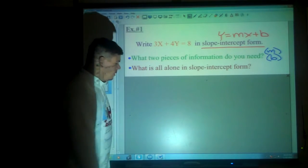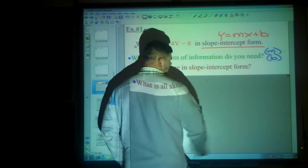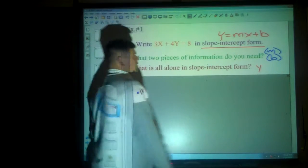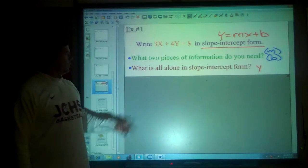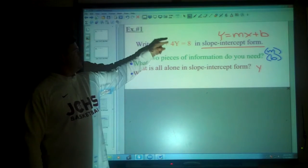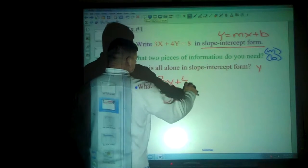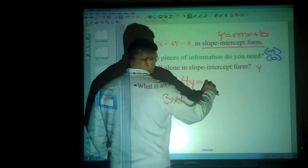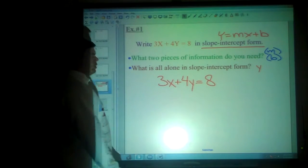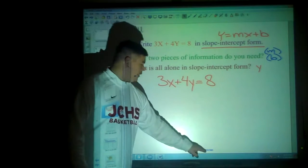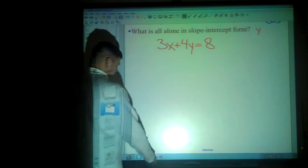What is all alone in slope-intercept form? The y value. The y is always alone in slope-intercept form. So we basically need to take this 3x plus 4y and play the shuffling game until we can get y alone. In the process, that will create slope-intercept form.